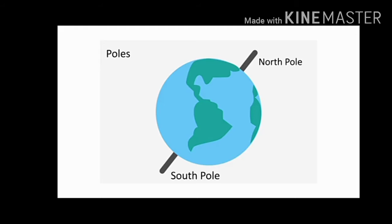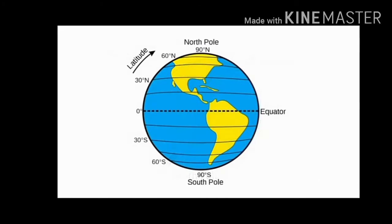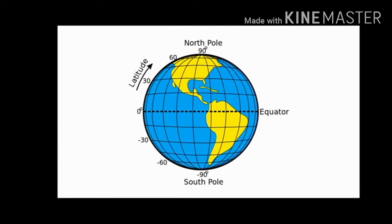A set of circles and semicircles can be drawn on the surface of the globe. The complete circles running from east to west are called latitudes or parallels of latitude. The semicircles joining the north pole and south pole and running from north to south are called longitudes or meridians of longitude.